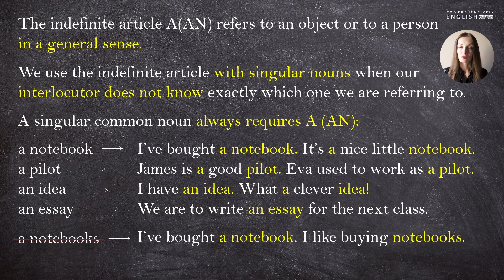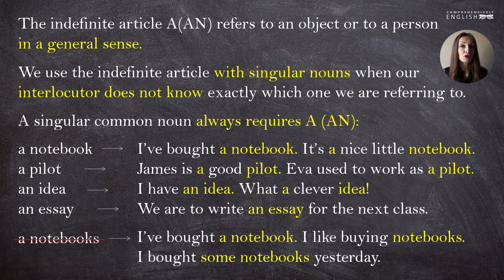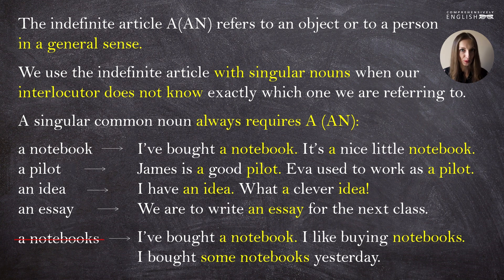For instance: 'I've bought a notebook.' 'I like buying notebooks.' Or 'I bought some notebooks yesterday' — in this case the place of the article is taken by 'some.' If you already have a determiner, numeral, or pronoun in front of your noun, you do not add any article. You should not say 'I bought the some notebooks' or 'a some notebooks' — that would be a mistake.